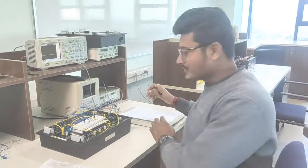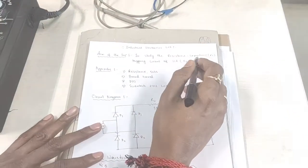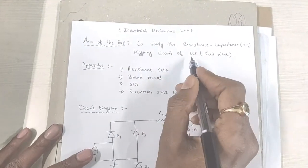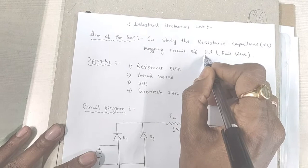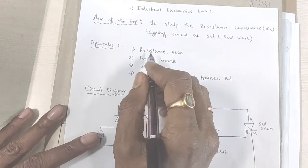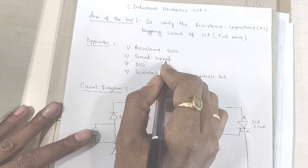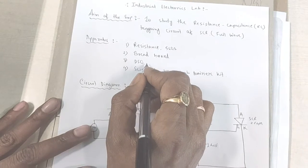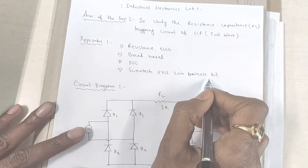The aim of the experiment is to study the resistance-capacitance-triggering circuit of SCR. As you know, SCR is silicon control rectifier. The apparatus required for this experiment is resistance 560 ohm, breadboard, TSO digital storage oscilloscope and Syntec 2712 lab trainer kit.